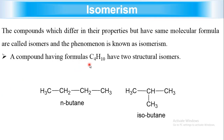Let's take an example. We have a compound with the formula C4H10 — it shows two structural isomers. The first one is N-butane and the other is isobutane. They have the same molecular formula but different structural formulas, so these are called isomers.